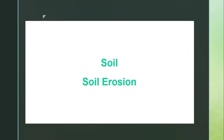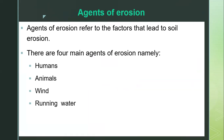Hello, welcome to this session. Our topic is soil, and we're still discussing soil erosion. In our previous videos we discussed the agents of soil erosion — those factors that lead to soil erosion. We said there are four main agents: humans, animals, wind, and running water. In the last previous video we were discussing running water.